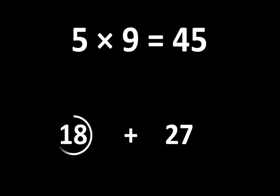So we can see that here are 2 groups of 9 and here are 3 groups of 9, so the total is 5 groups of 9.